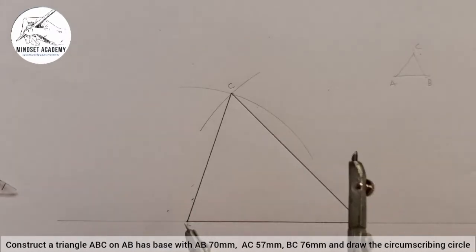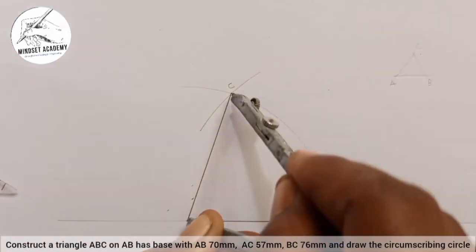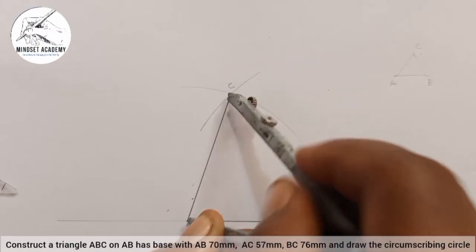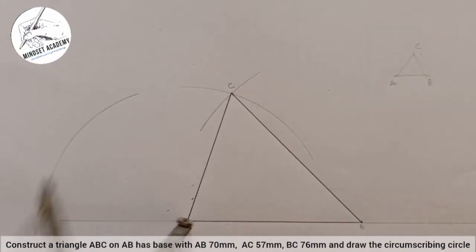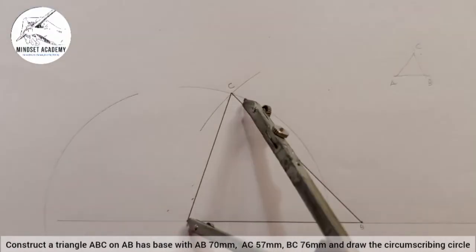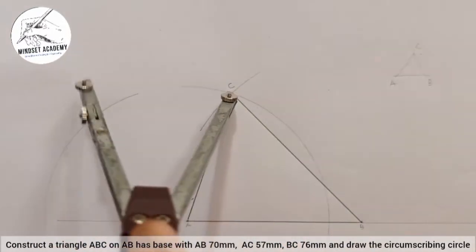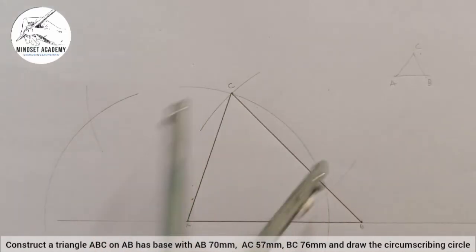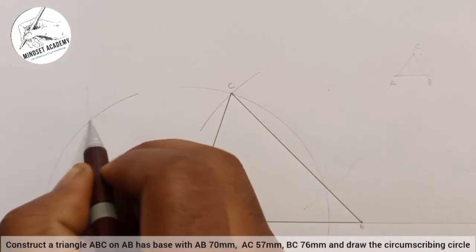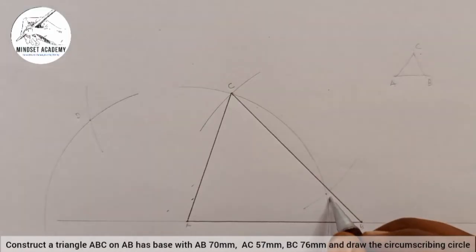So we are going to bisect line AC. I will place my compass at point A to C and strike an arc at the right hand side, at the left hand side, and also at the right hand side. With the same radius I will place it at C. I will draw an arc that will intersect the first arc on both sides. Where they meet, I will call them D and E.